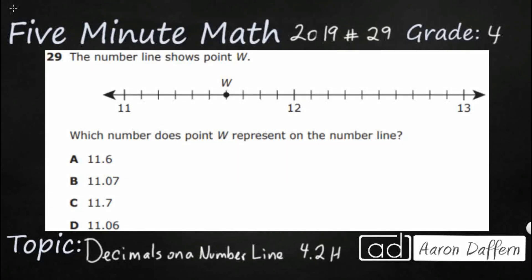Hello and welcome to 5-Minute Math. Today we are looking at the fourth grade concept of decimals on a number line. This is standard 4.2H in the great state of Texas and we are using item number 29 off the 2019 released STAR test.